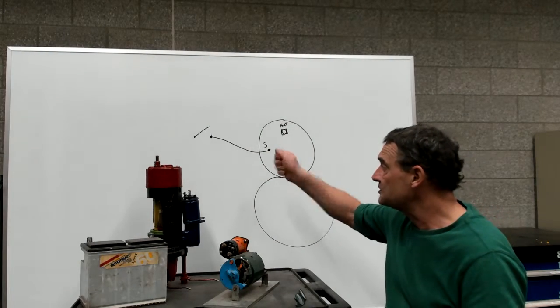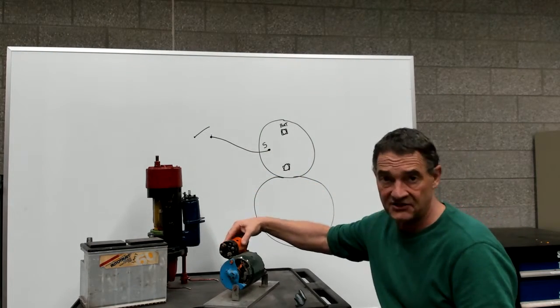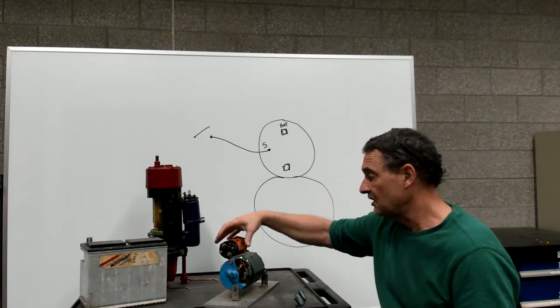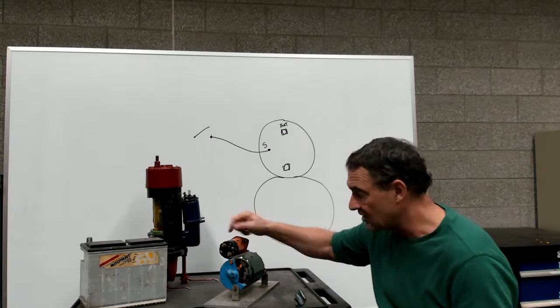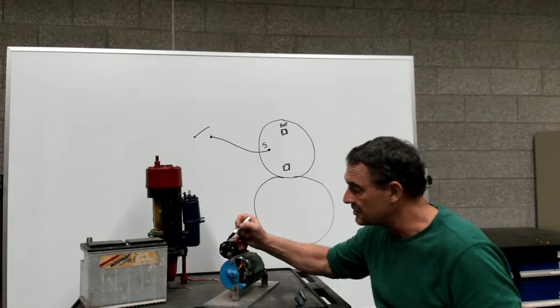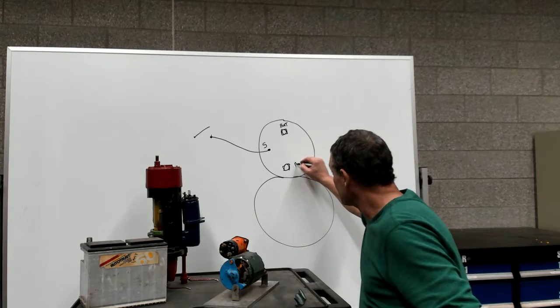So when the driver turns that key switch it excites this solenoid and that solenoid pulls in an armature that makes a contact across the battery terminal and the motor terminal. I guess we could write that motor.